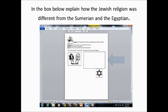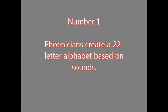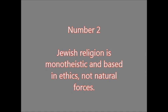In your notes, here's the last section to fill out. If anything hasn't been filled out, we'll complete that in class. In this box, compare and contrast the Jewish religion to that of the Sumerians and the Egyptians. Hope you enjoyed the video. The big ideas for this video: number one, the Phoenicians created a 22-letter alphabet based on sounds; and number two, the Jewish religion is monotheistic and based in ethics, not natural forces. Thanks for watching.